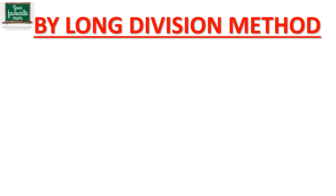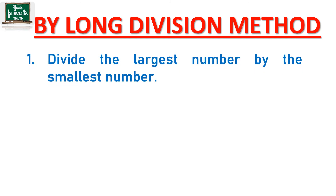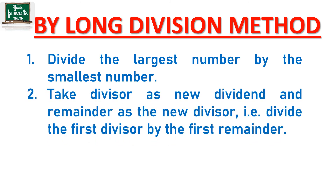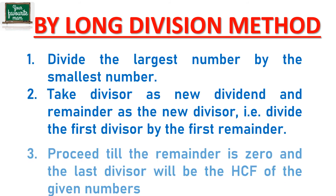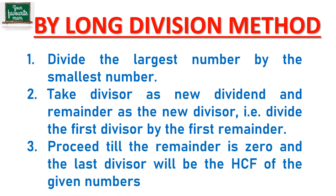Next is finding HCF by the long division method, in which we divide the largest number by the smallest number. Then we take the divisor as the new dividend and the remainder as the new divisor. We proceed with the same division process until the remainder is 0, and then the last divisor will be the HCF of the given numbers.